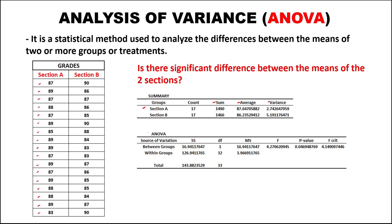For the ANOVA table, we have the sum of squares and the degrees of freedom between groups, which is 1 — because DF equals N minus 1, and since we have 2 sections, that is 2 minus 1 equals 1. Within the groups, we add all data: 17 plus 17 equals 34, and since we have 2 groups, 34 minus 2 gives a degrees of freedom within groups of 32.